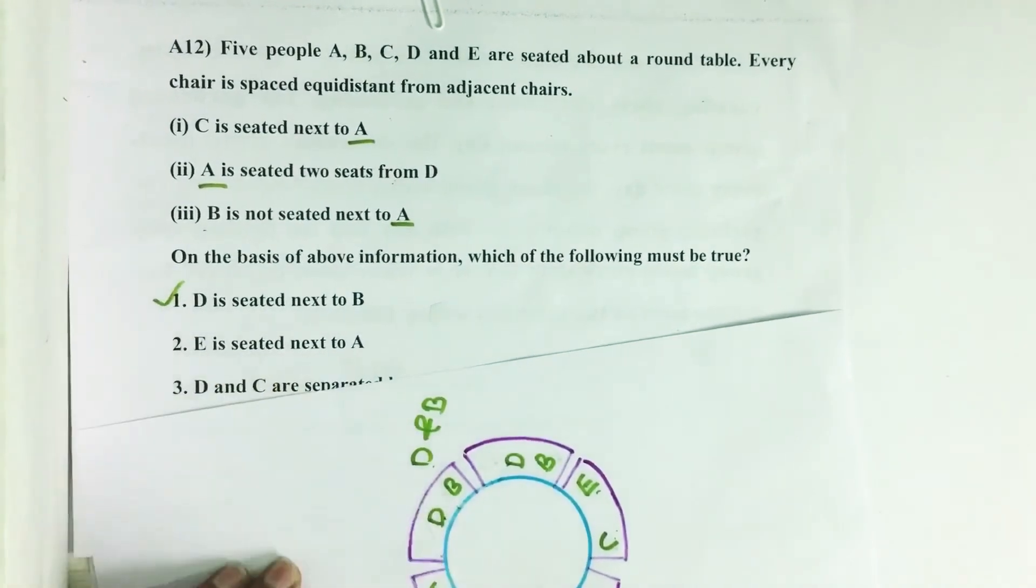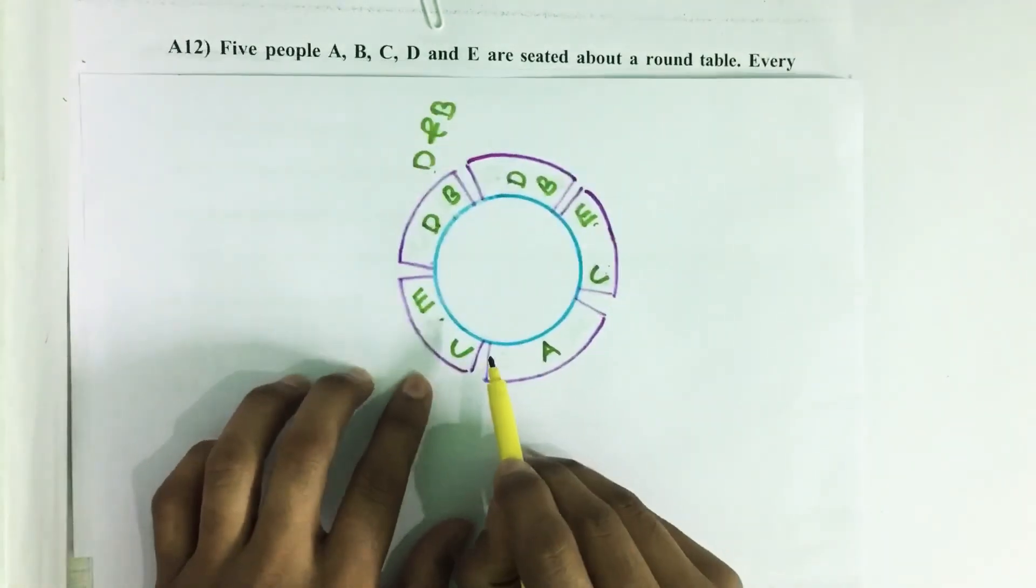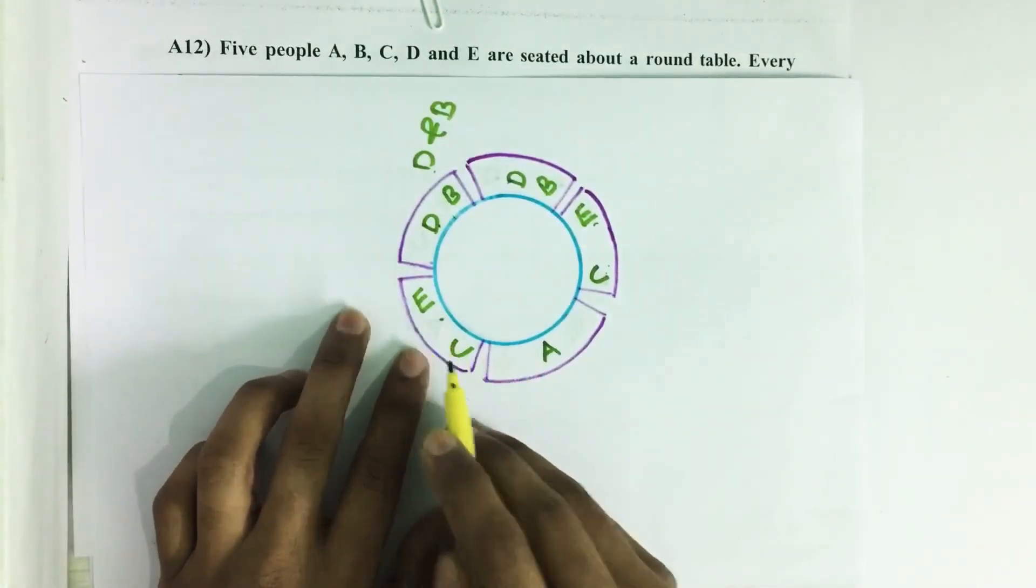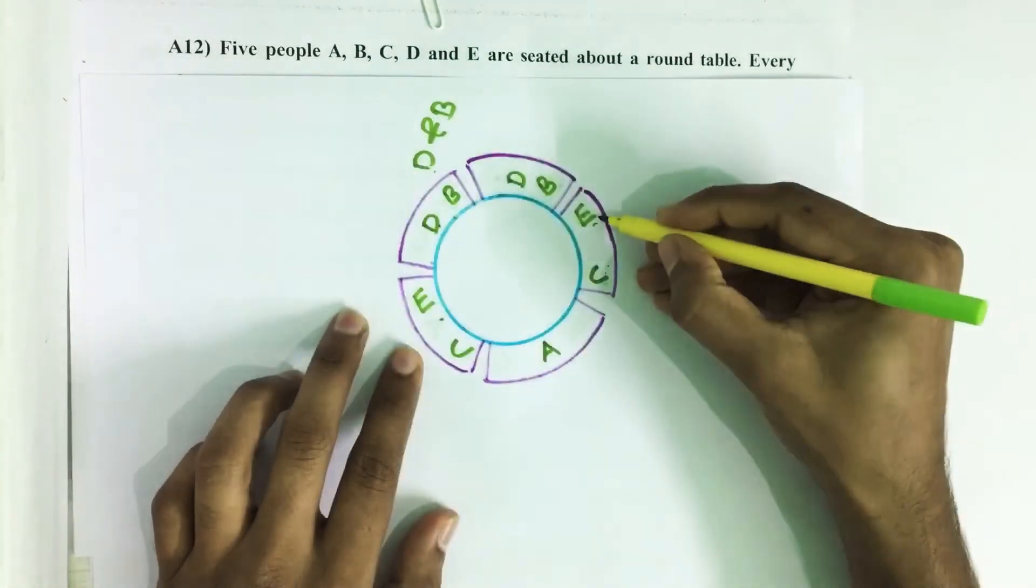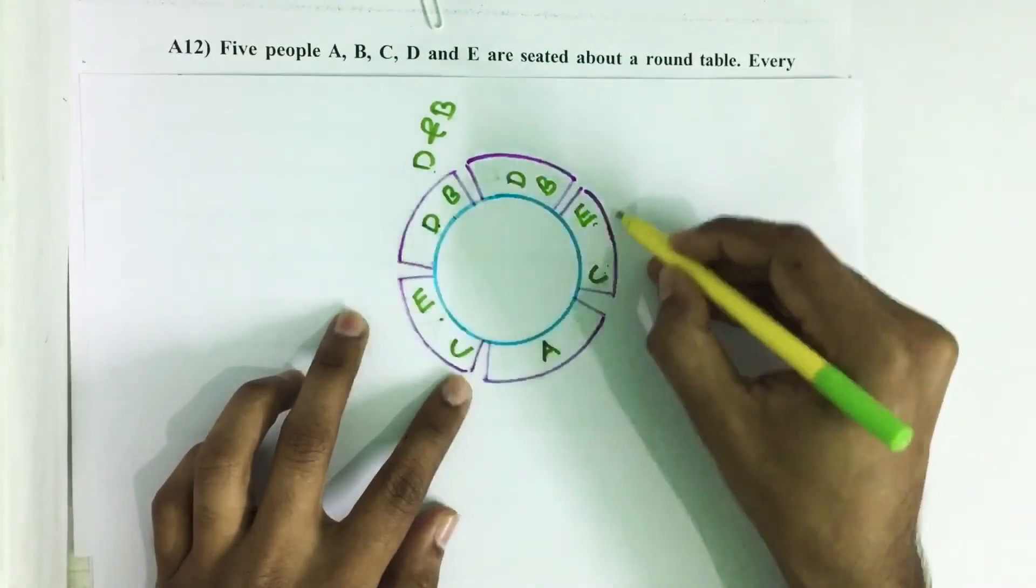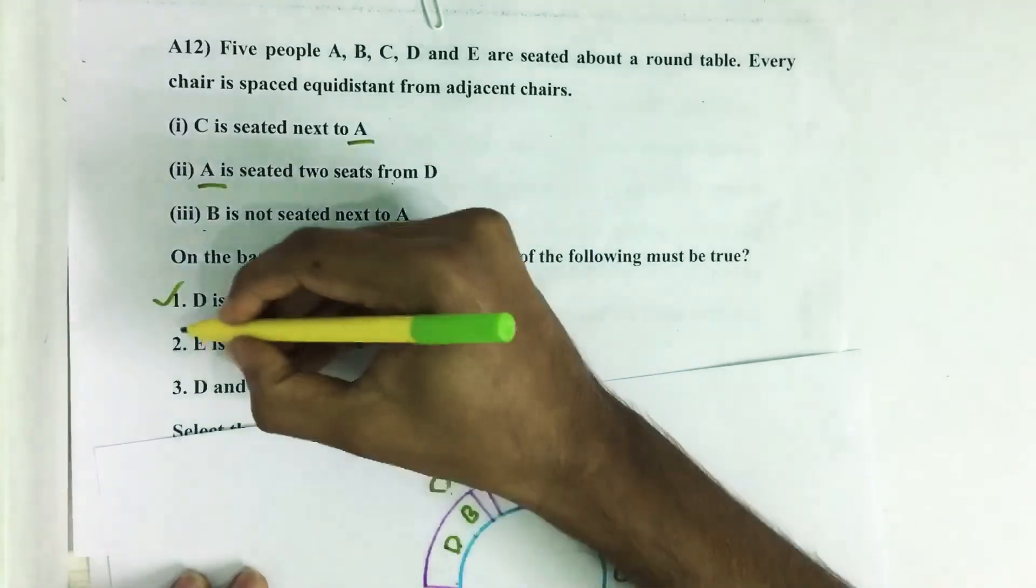Then E is seated next to A. E can be seated either here or here. Both these are next to A, so second statement also true.